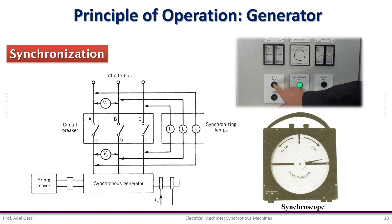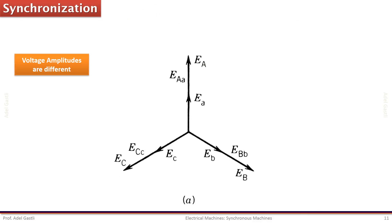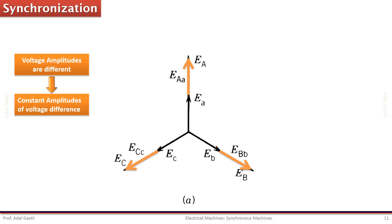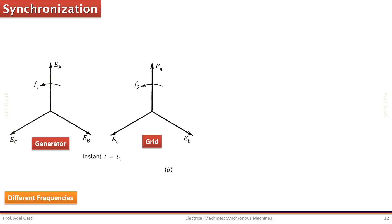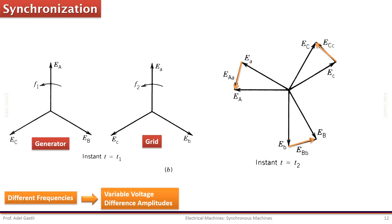For each situation where the previous conditions are not satisfied, the glowing patterns of the lamps are different, which can indicate what action is needed to reach full synchronization. When the voltages are not the same but the frequency and phase sequence are the same, the difference between generator and grid voltages has a constant amplitude, so the lamps will have the same brightness depending on that amplitude. If the frequencies are not the same but voltages and phase sequence are the same, the voltage difference will be variable in amplitude, which leads to blinking lamps.